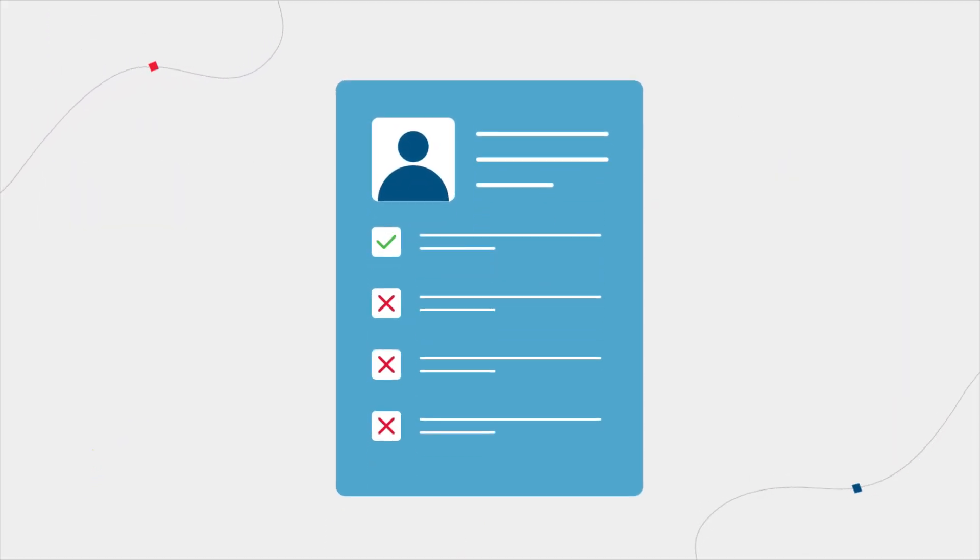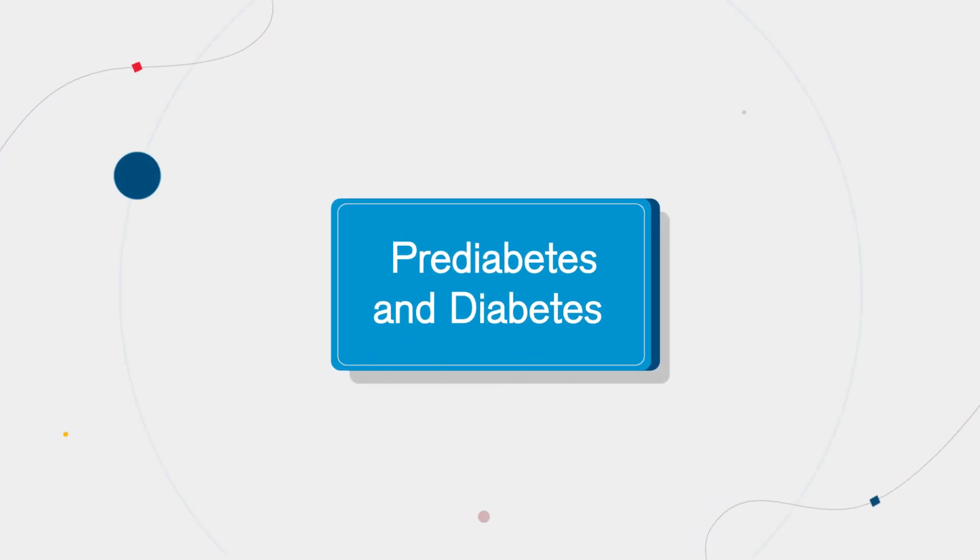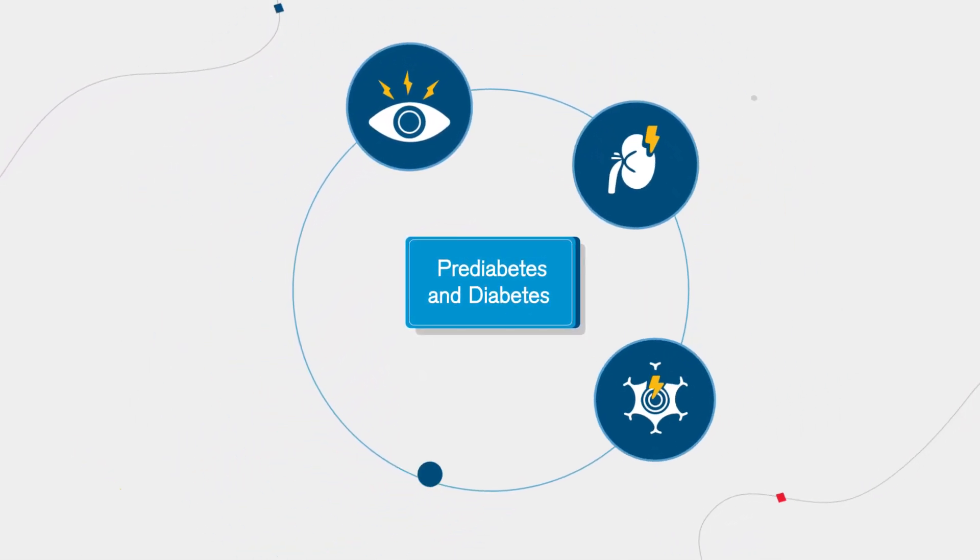If not managed properly, prediabetes and diabetes can cause serious damage to the eyes, kidneys, nerves, heart, or brain.